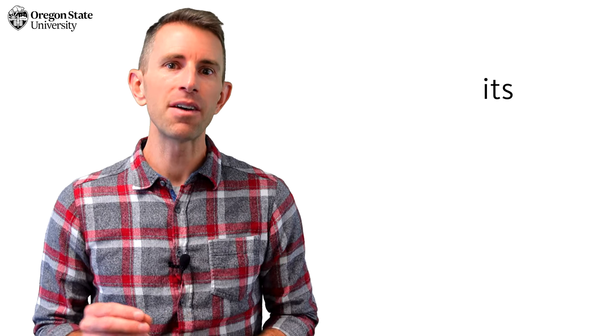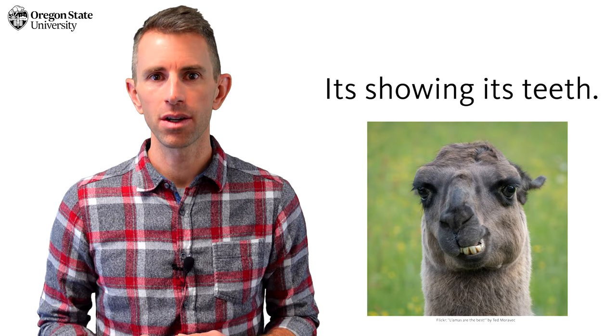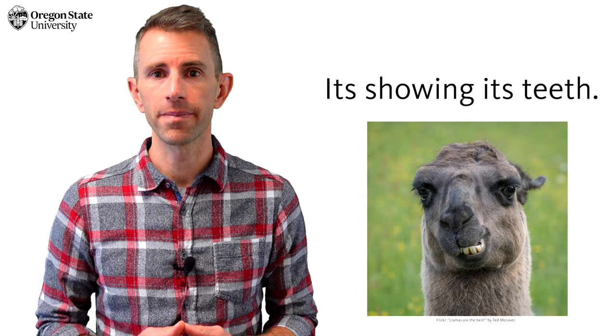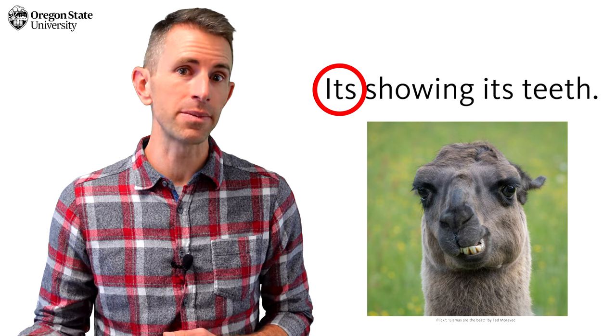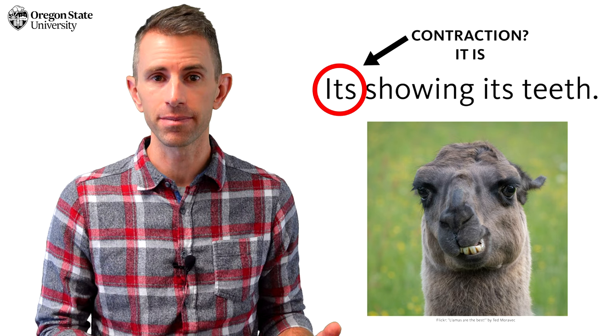Probably the most common example of this is the word it's. If we had a sentence like, it's showing its teeth, which it's would need an apostrophe? Well, that first one seems like a contraction for it is. And it is.